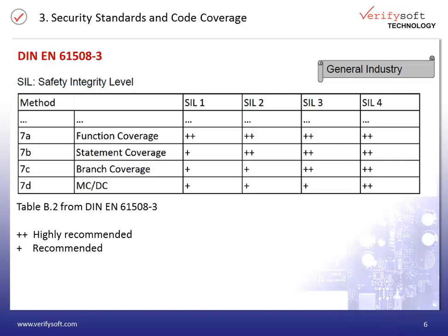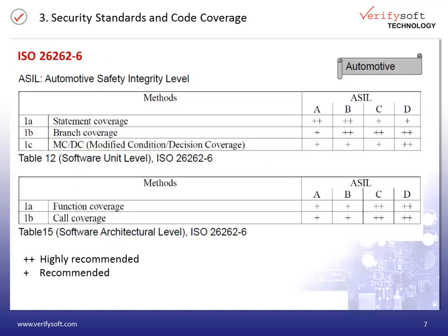There are other standards which are derived from the general standard IEC 61508. One of them is ISO 26262. ISO 26262 is the standard of the automotive industry for the functional safety of road vehicles. Things are quite similar to the standards we have seen before. Instead of SIL, the safety integrity levels are named ASIL — the Automotive Safety Integrity Level — and they have no numbers but letters from A to D. For the highest level, ASIL D, modified condition decision coverage needs to be achieved. And of course, you need a good coverage tool to show and prove that you have achieved this level.